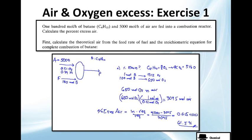Let's do this exercise, easy. 100 mol of butane, which is here, and 5000 mol of air per hour are fed into a combustion reactor. They tell you please calculate the excess air.